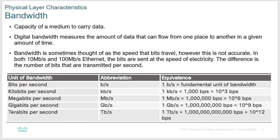You'll need to know your bandwidth units: bits per second, kilobits per second, megabits, gigabits, and terabits. A bit is a one or zero. A kilobit is one thousand bits, a megabit is a million bits, a gigabit is a billion bits, and a terabit is a trillion bits. Actually, a kilobit is technically 1,024 bits, so you may see different numbers depending on whether they're giving a baseline or being precise.